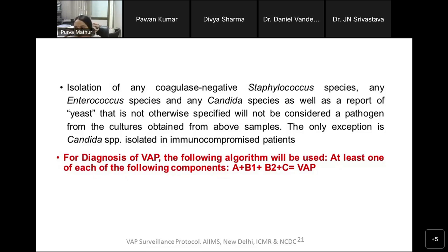Q&A: Why are CoNS, Candida, and Enterococcus excluded? Because they are all upper respiratory colonizers — you will not see coagulase-negative Staphylococcus, Enterococcus, or Candida species causing ventilator-associated pneumonia. They are well-known upper respiratory colonizers and therefore must be excluded.